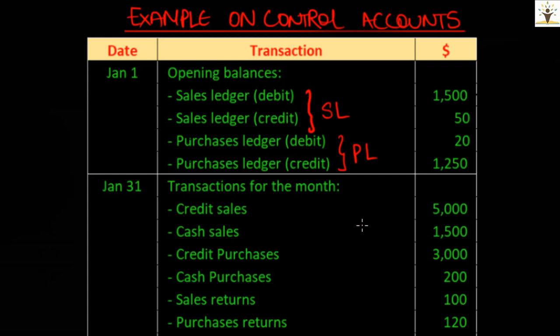If a transaction or an entry affects any debtor account, then it shall be recorded in the sales ledger control account. Whereas if an entry affects the creditor, it will be recorded in the purchase ledger control account.